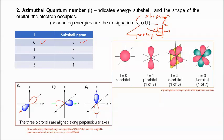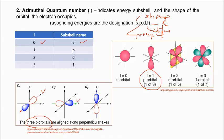There are 3 P orbitals aligned along perpendicular axes: the first P orbital along the X-axis, the second along the Y-axis, and the third along the Z-axis.